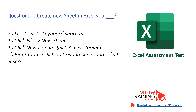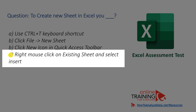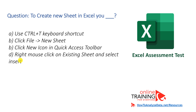Here is a variation of this question with different choices. To create a new sheet in Excel, which is correct: use Ctrl-T keyboard shortcut, click File New Sheet, click New Icon on the Quick Access Toolbar, or right-click on an existing sheet and select Insert? Using the exclusion method: Ctrl-T creates new tables, not new sheets. File New Sheet doesn't exist in Excel's menu. The New Icon creates a new workbook, not a new sheet.